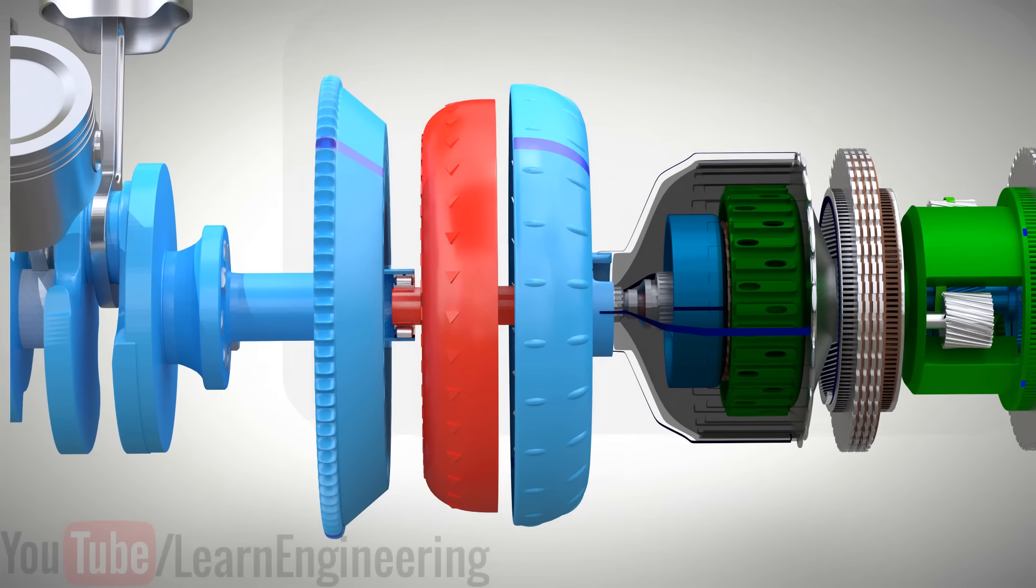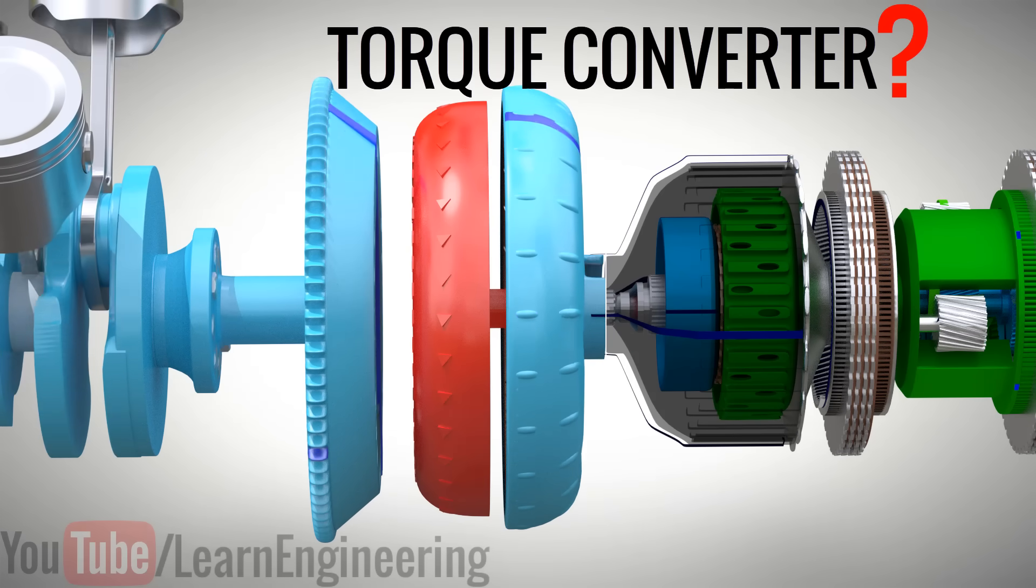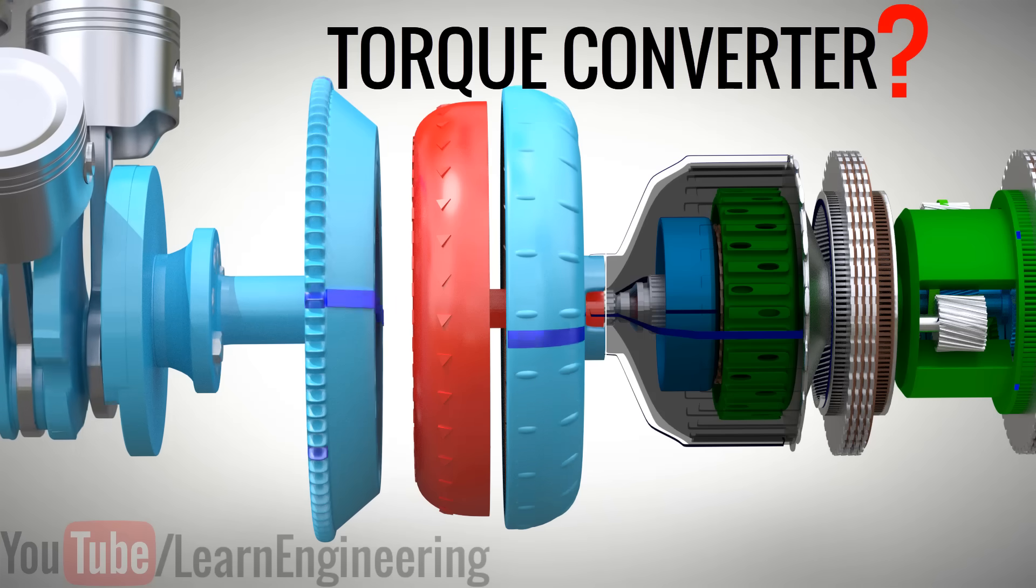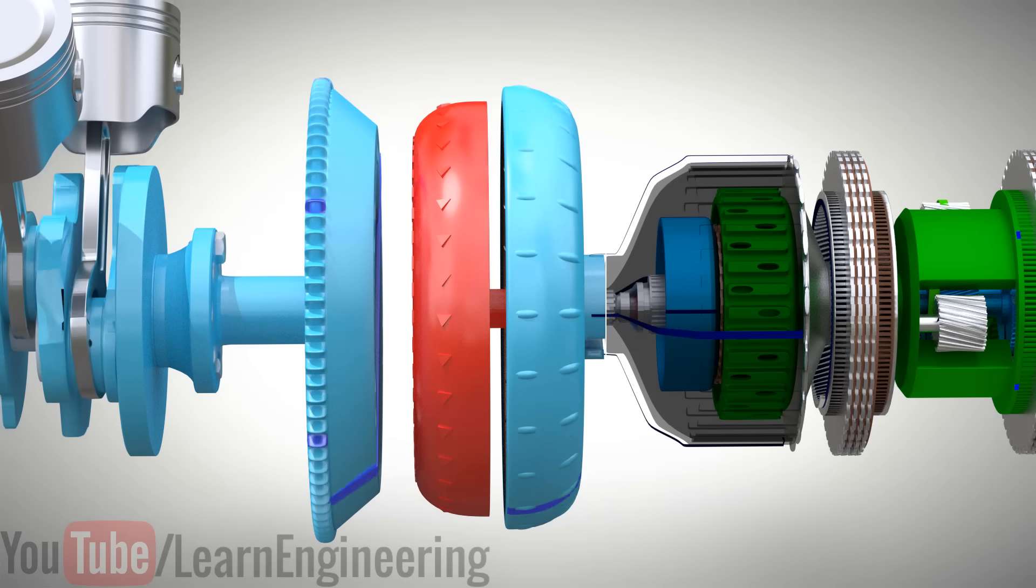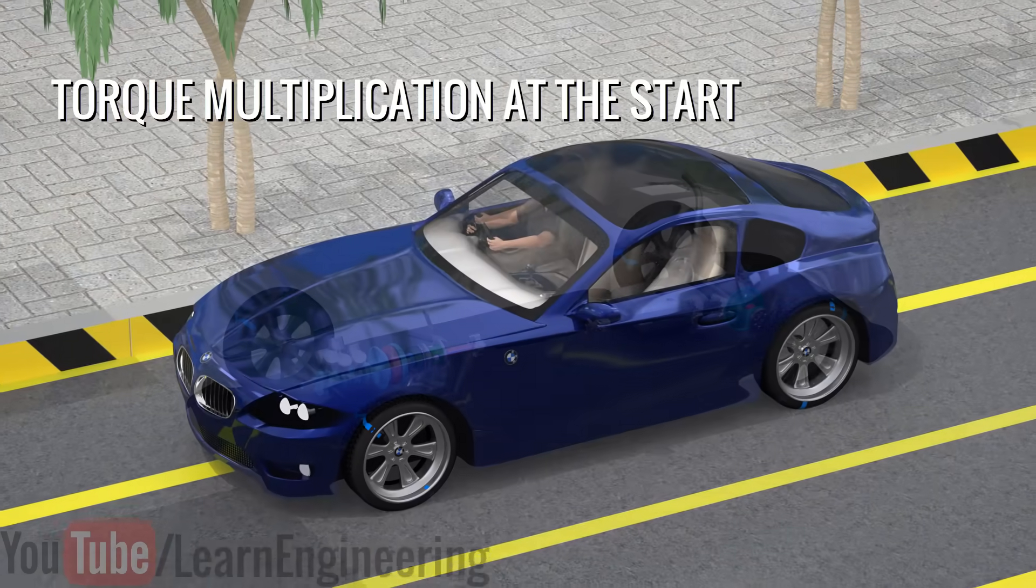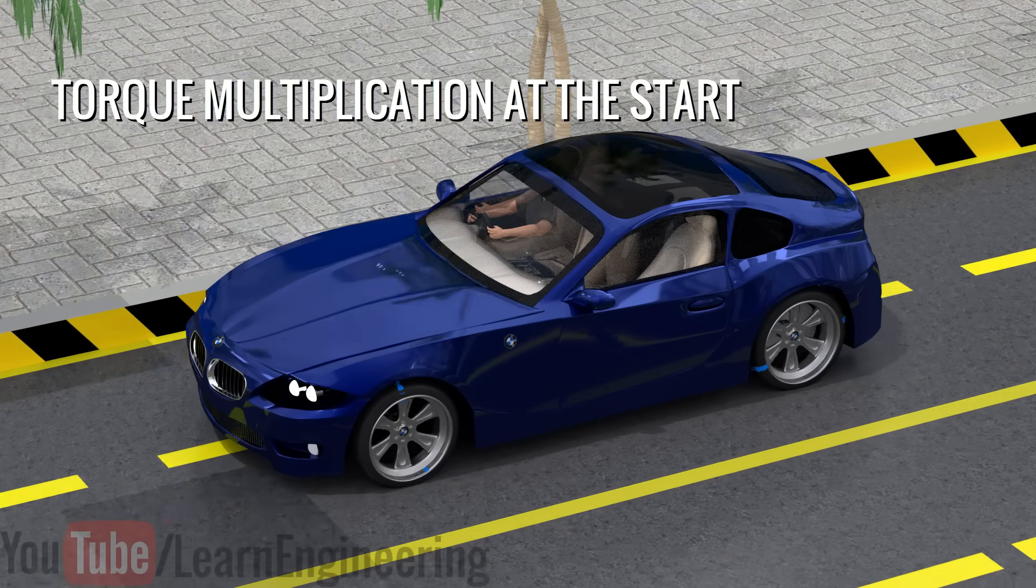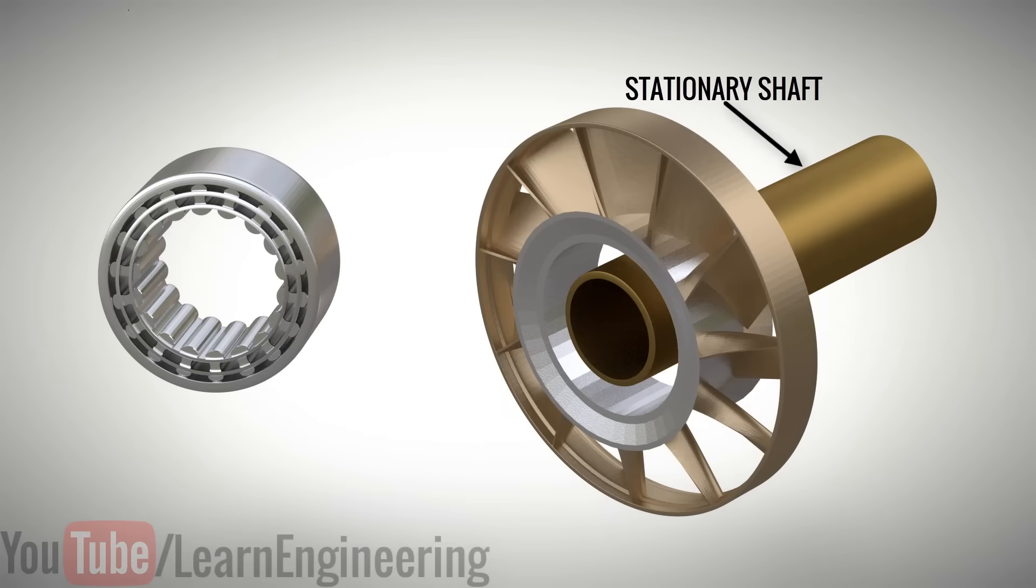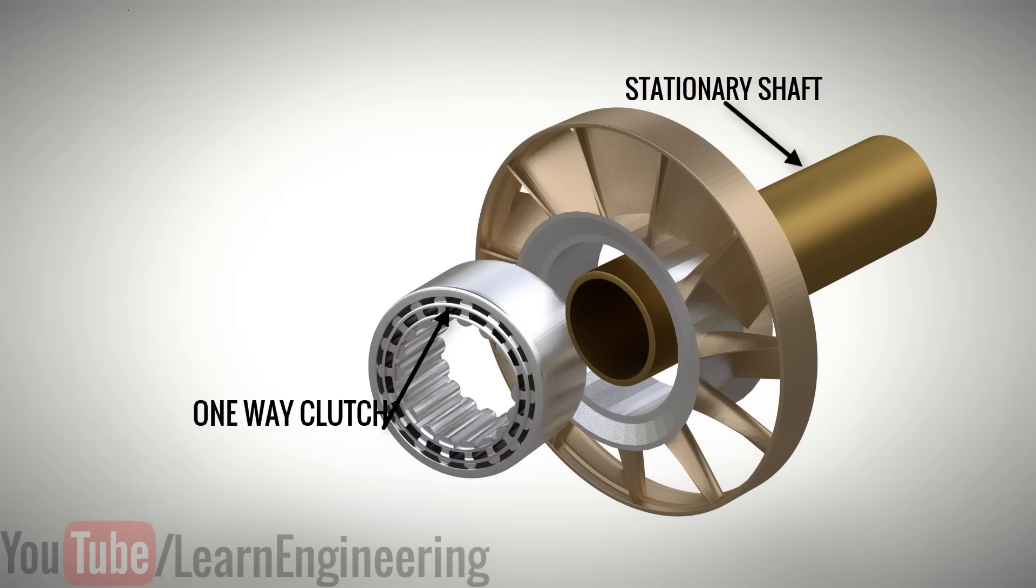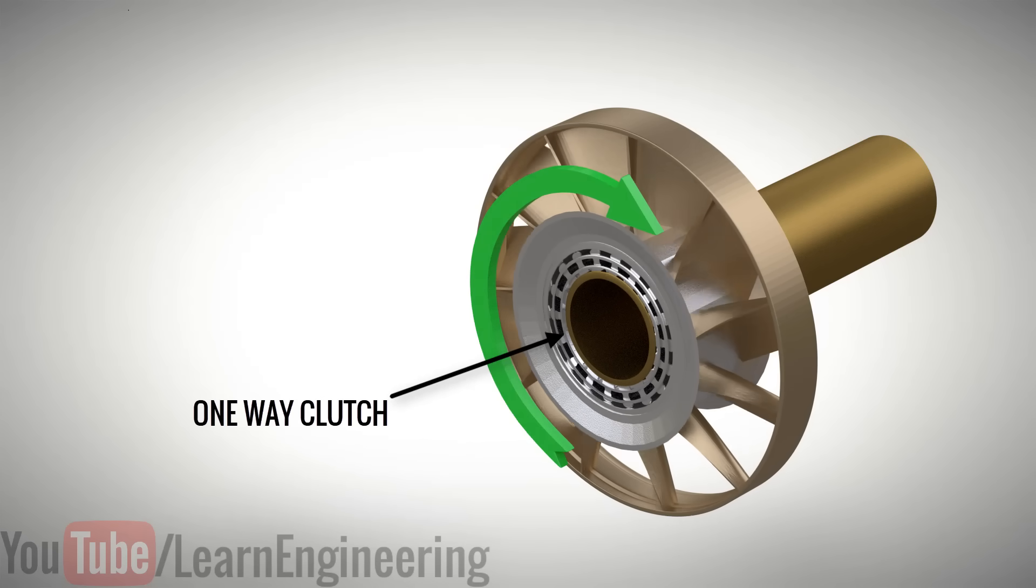Now, you might be wondering why this device, which isolates motion, is named as a torque converter. This is because one of the most important functions of this device is to multiply the torque as the vehicle starts to move. Let's see how the torque converter does this. The reactor is connected to a stationary shaft, via a one-way clutch. This means the reactor will be able to turn in one direction, but not in the opposite.